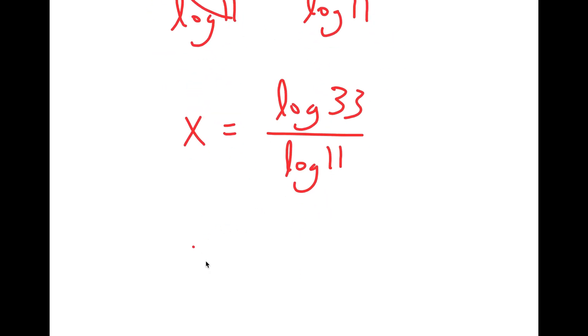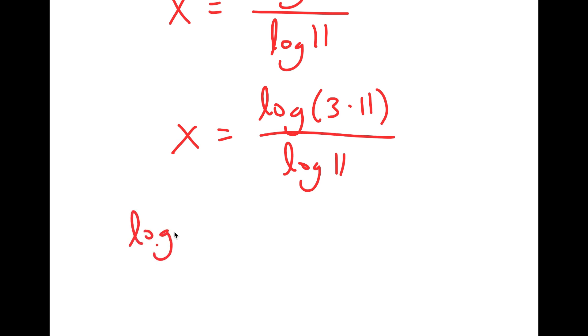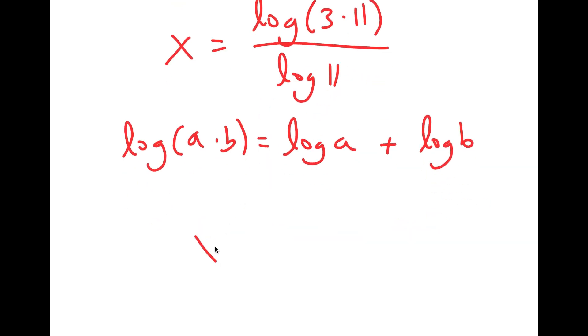And this is equal to log of 3 times 11 over log 11. And if I have something in the form log a times b, this is equal to log a plus log b. So log of 3 times 11 is equal to log of 3 plus log of 11 over log 11.